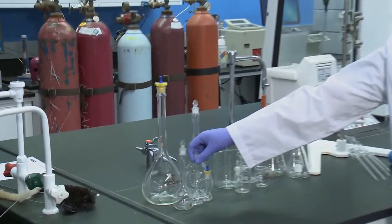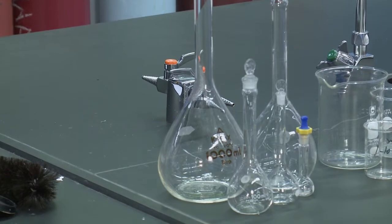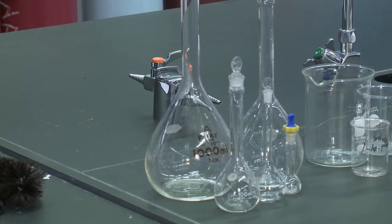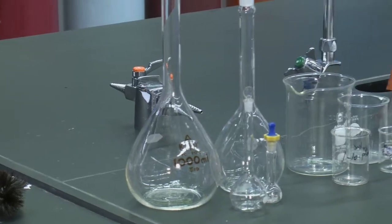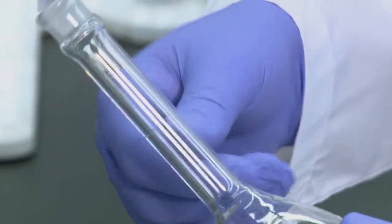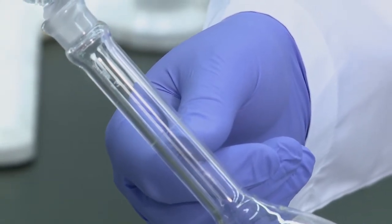First we have various volumetric flasks. These are used to make very accurate concentrations of different solutions. Each one of them comes with a single mark on it and can only be used to produce the volume that is on the label of the flask. These will be used to produce most of your standards and unknown samples in most experiments.